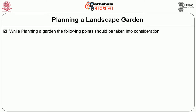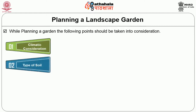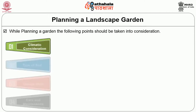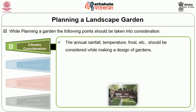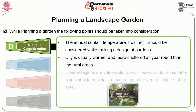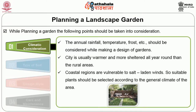While planning a landscape garden, the following points should be taken into consideration: first, climatic consideration; then type of soil; then design style; then care and maintenance. For climatic consideration, the annual rainfall, temperature, frost etc. should be considered while making a design of gardens. Cities are usually warmer and more sheltered all year round than rural areas. Coastal regions are also vulnerable to salt-laden winds. So suitable plants should be selected according to the general climate of the areas.